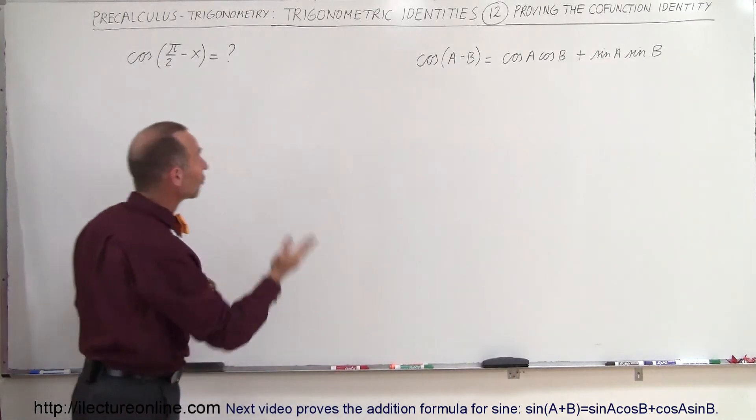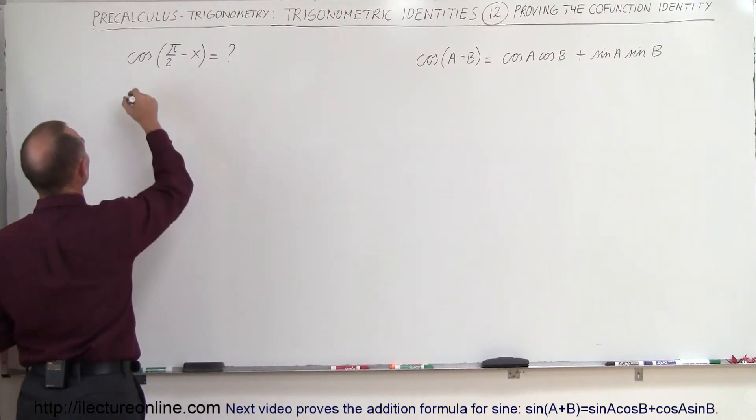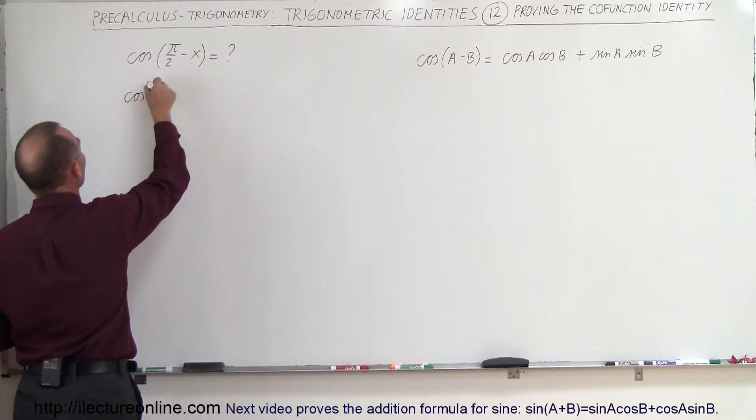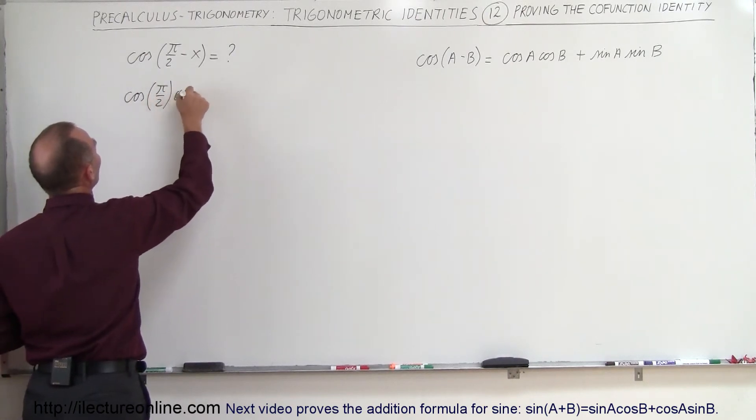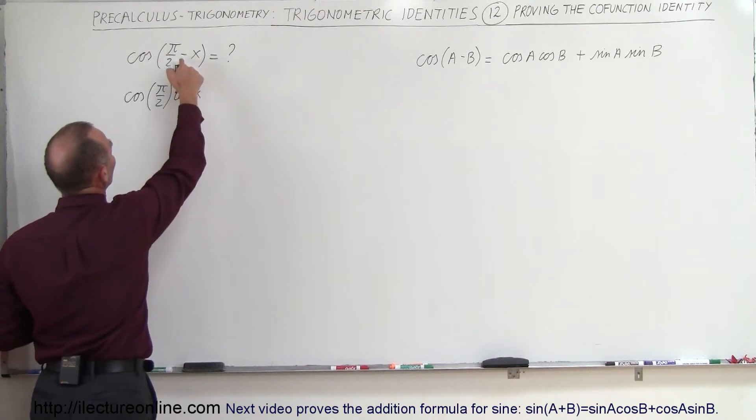We apply it to this equation right here, and so we can say that this should then be the cosine of the first angle, pi over 2, times the cosine of x. And then since we have a minus there, it becomes plus.